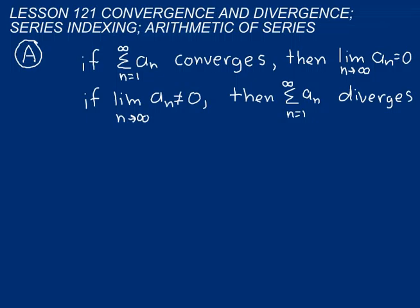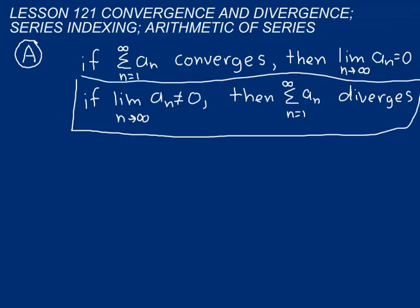Remember you learned about contrapositives and converse and inverse way back in lesson 3. This statement is much more helpful because now we can say that if the limit as n approaches infinity of that value a sub n, if that's not equal to 0, then we know that it diverges.